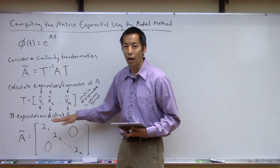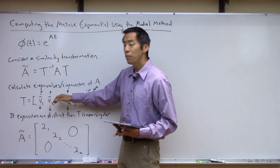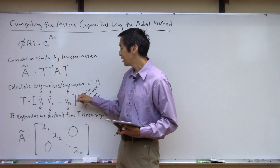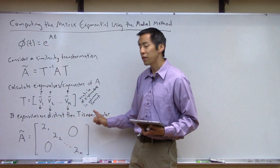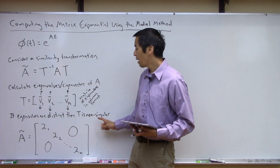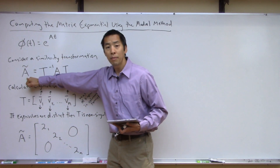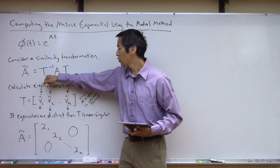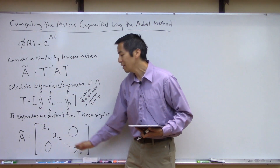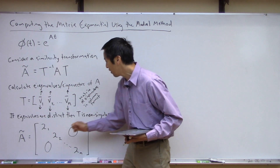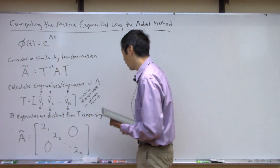Do not go row-wise — some people might try to do that and you're going to mess yourself up. So provided you make this transformation matrix T out of all the eigenvectors in column format, and if your eigenvalues are distinct, then this is the idea of diagonalization: the A-tilde matrix will be completely diagonal, with all the eigenvalues of the original A matrix on the diagonal and zeros everywhere else.